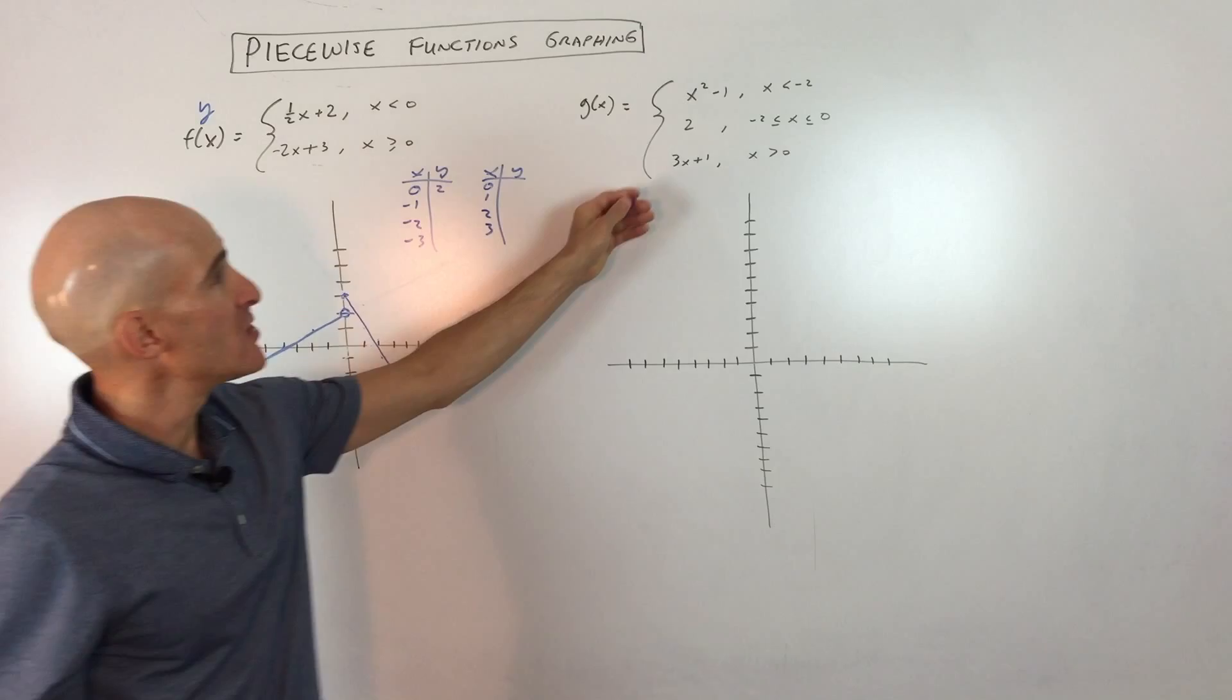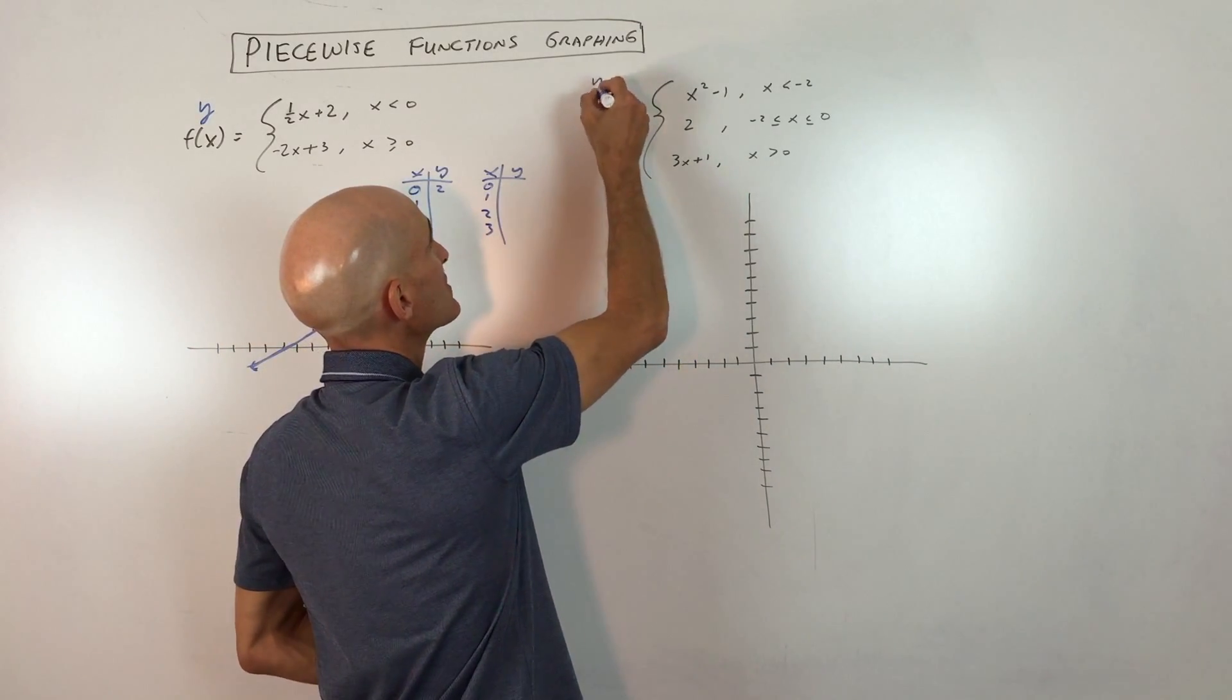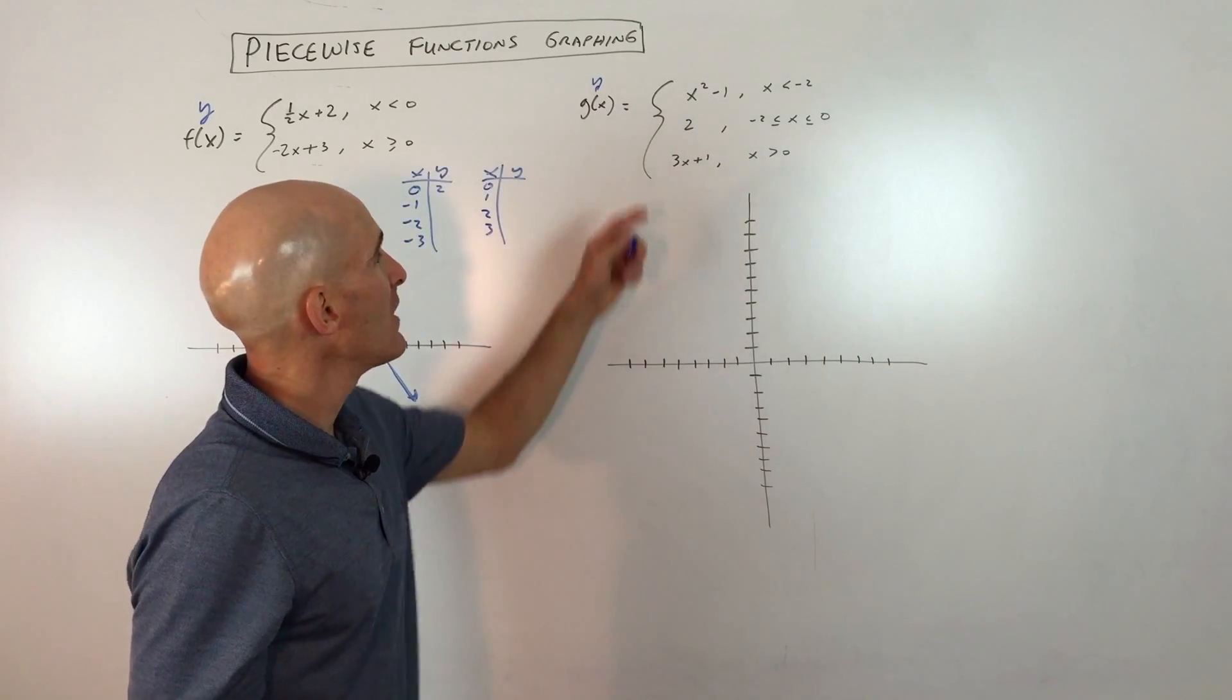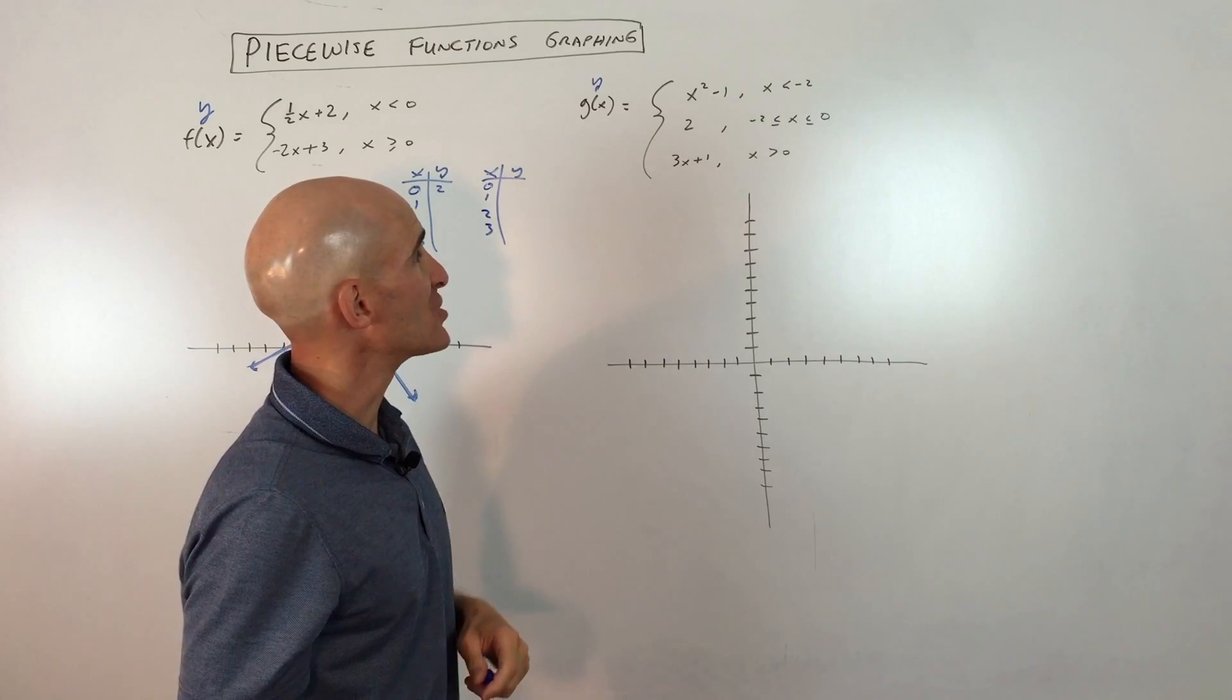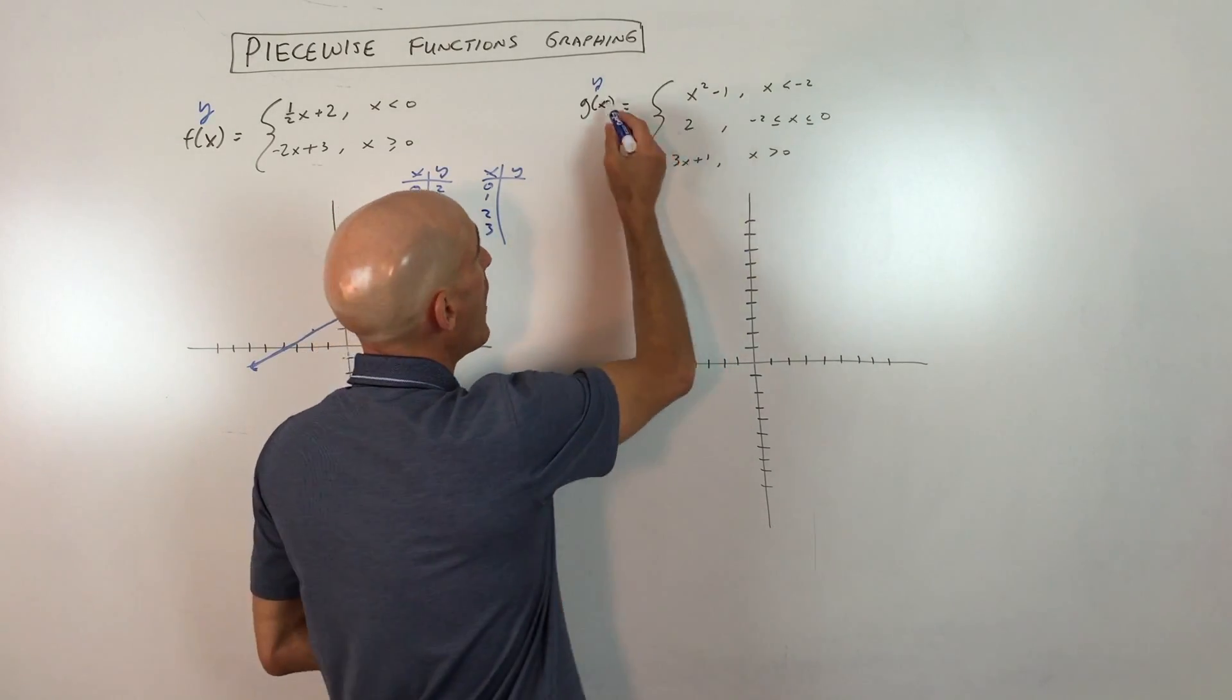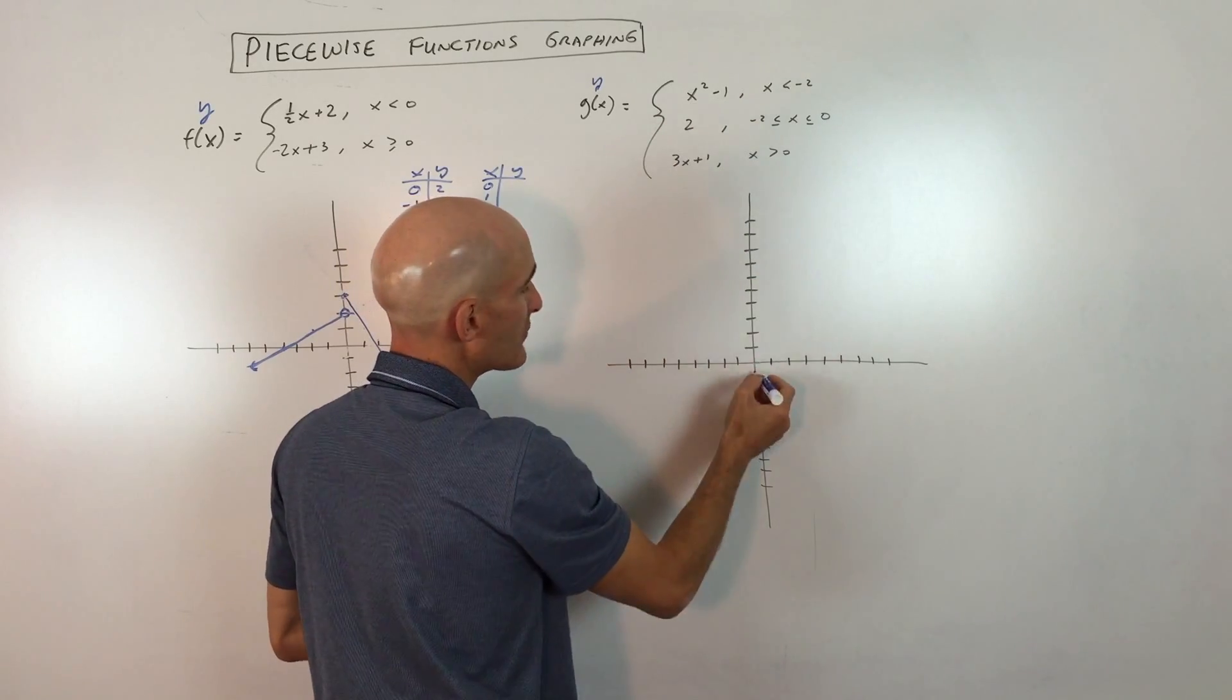So let's do example number two here. g(x), which is just another function. This is like saying y. We're just calling this the g function instead of the f function like the first one. And here you can see we actually have three equations. So here what we're going to do is we're going to graph y equals x squared minus 1. So that means it's a parabola, an x squared graph, shift down 1.